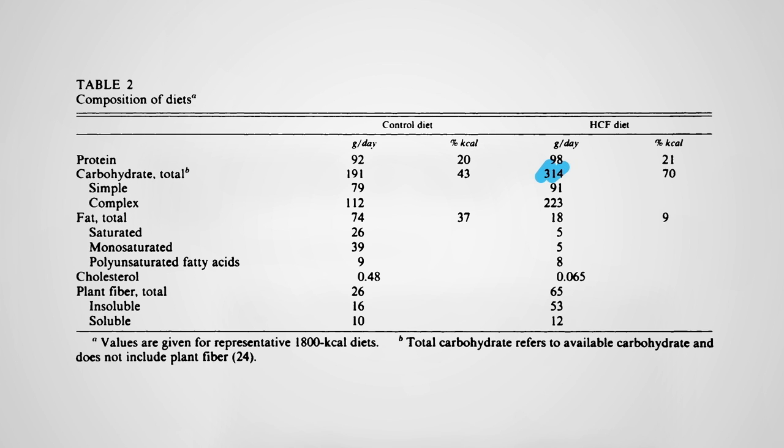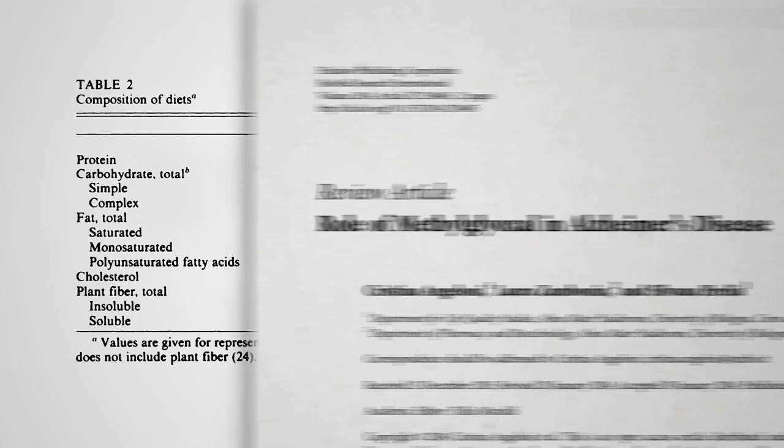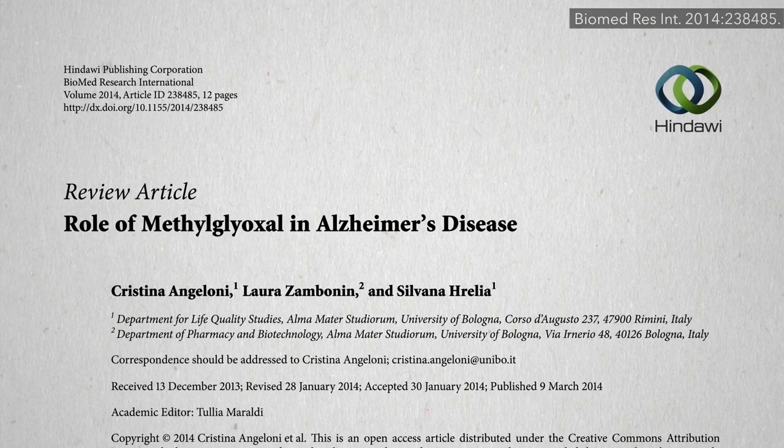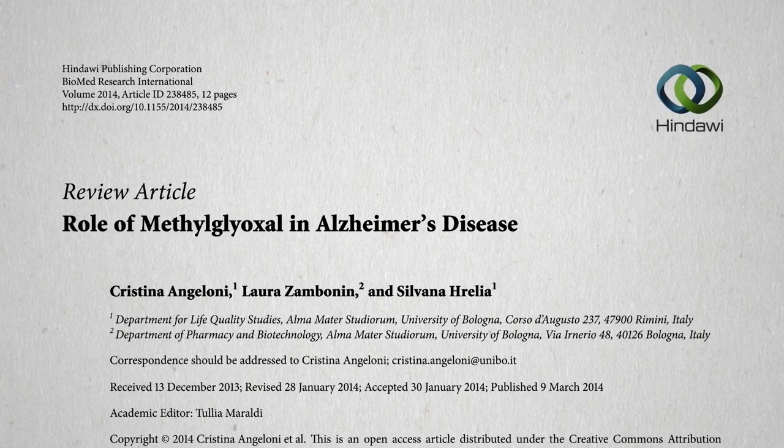The irony doesn't stop there. One of the reasons diabetics suffer such nerve and artery damage is due to an inflammatory metabolic toxin known as methylglyoxal that forms at high blood sugar levels.